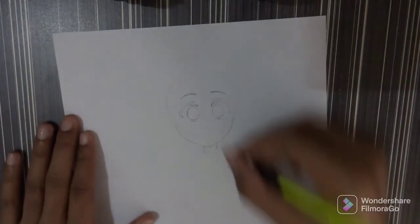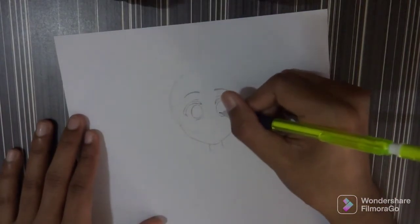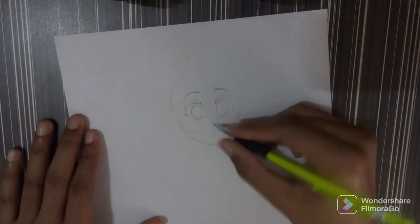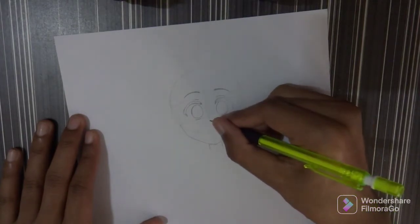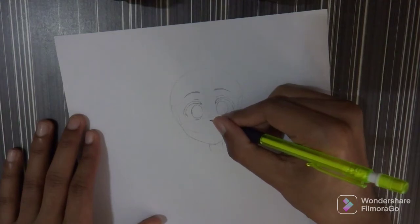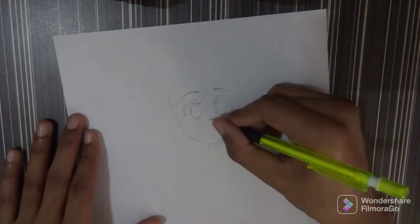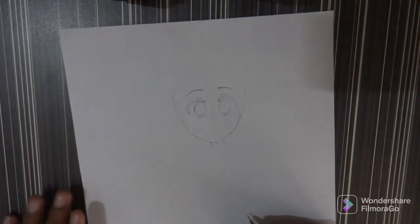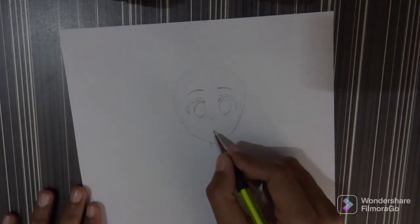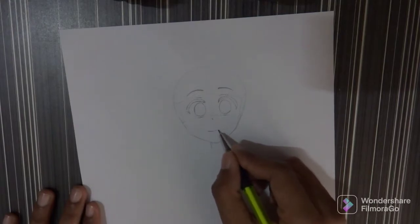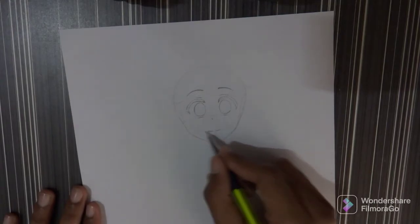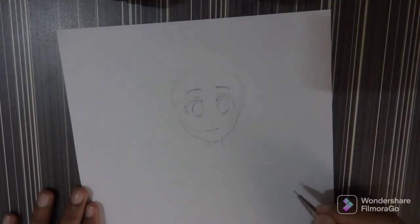Okay, now for the nose it's very easy though. You got this point quite a bit away from that point below, make something like this. That's it for the nose. And for the smile or the mouth you have to make it here on this line like this.